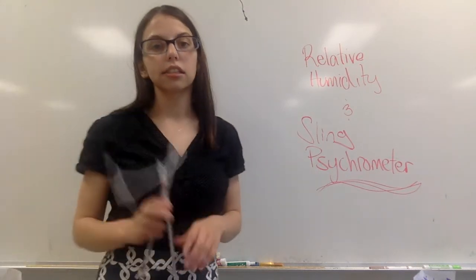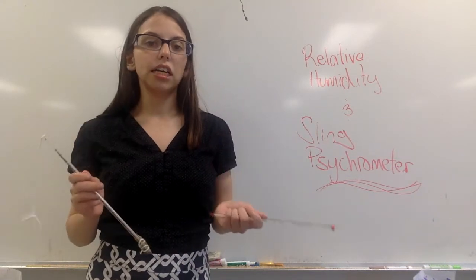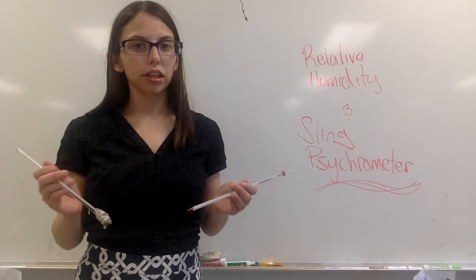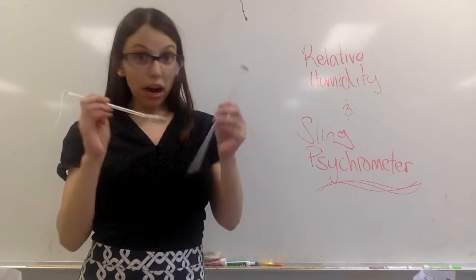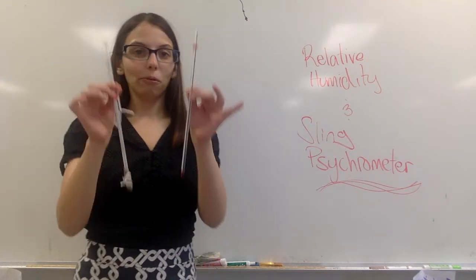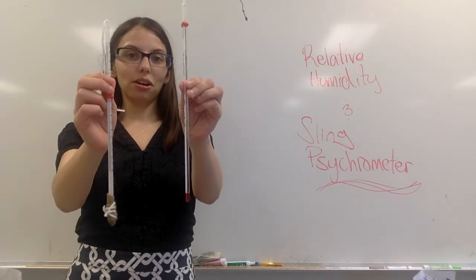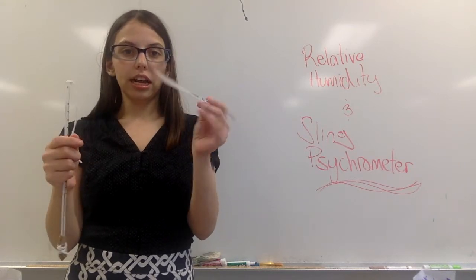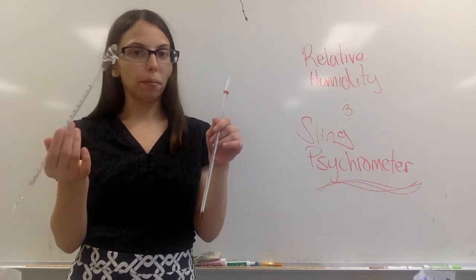So now that we got that out of the way, let's look at a sling psychrometer. This is a device that we use to measure relative humidity or we use to calculate it. There are actual sling psychrometers that do not look like this, that are actual legitimate meteorological instruments, but we improvise and you can make your own at home. All you need is two thermometers, some string and some gauze or a paper towel.